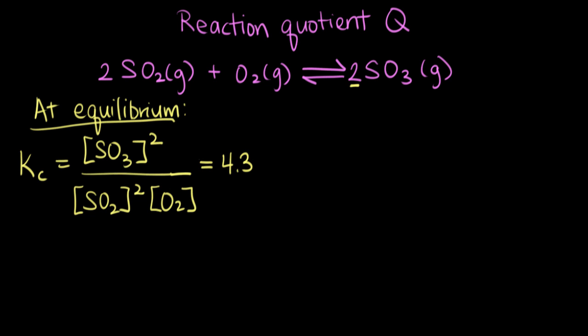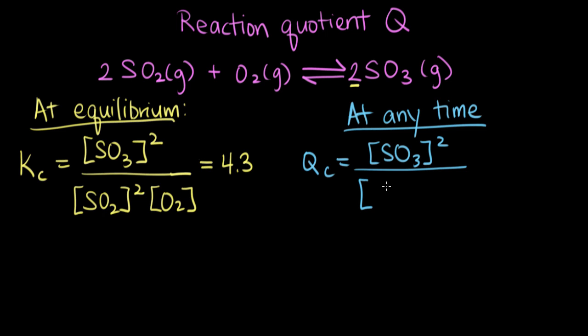But what if we're interested in looking at the reaction and it's not at equilibrium yet, or maybe we just don't know if it's at equilibrium? In that case, when you're not sure it's at equilibrium or really at any point in your reaction or any time, we can calculate the reaction quotient Q. So Qc is equal to the concentration of our product squared, so the concentration of the product raised to the stoichiometric coefficient times the reactant concentrations, also raised to their stoichiometric coefficients. So SO2 squared and O2.